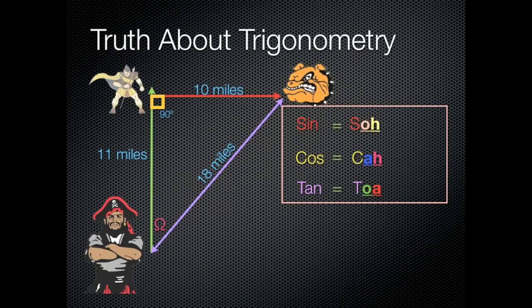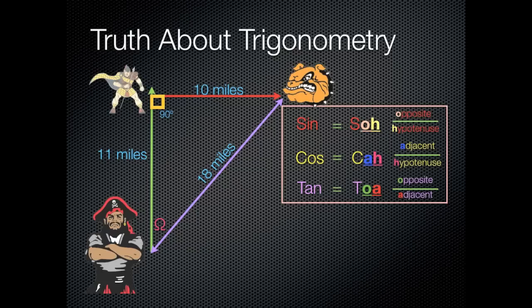Sohcahtoa. Sine equals opposite over hypotenuse. Cosine equals adjacent over the hypotenuse. And tangent equals opposite over adjacent.